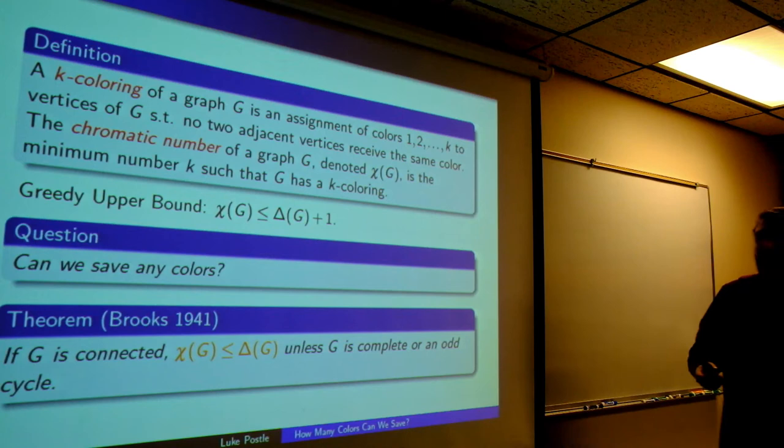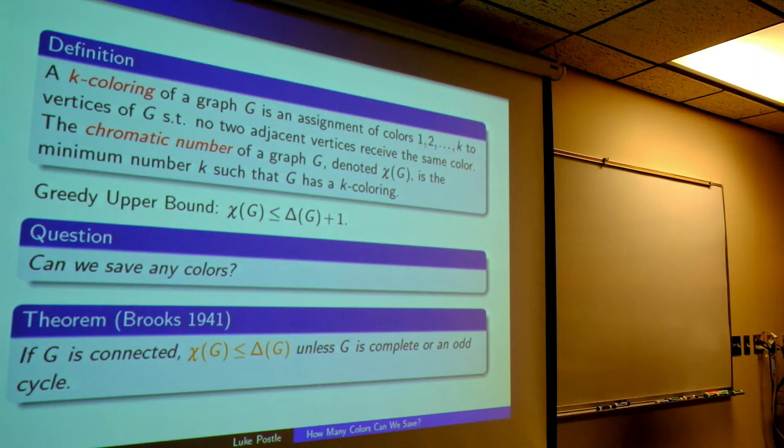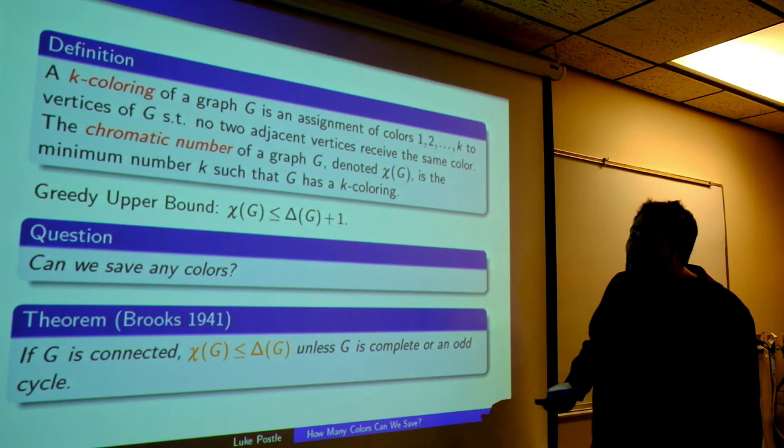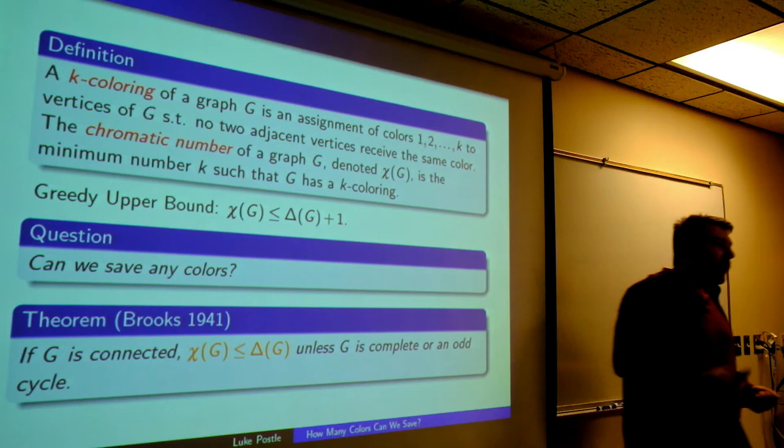But here's a nice question: can we save any colors from this trivial upper bound? Well, no, because it's tight — it's tight for complete graphs, which have degree n minus 1 but need n colors, and also for odd cycles, which have max degree 2 but need 3 colors. Brooks' theorem from 1941 says that this is basically it: if you assume you're connected, the chromatic number is at most delta, unless you're a complete graph or an odd cycle.